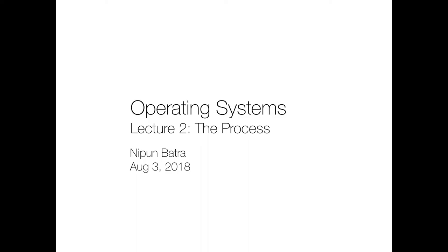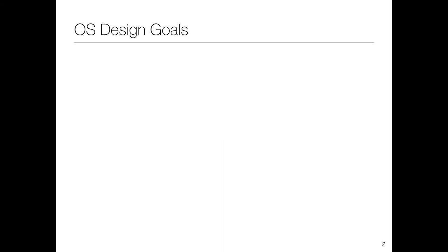Let's start the lecture. Yesterday we talked about basics of operating systems — we saw the history of operating systems, discussed a few ideas on why we should be studying them, and discussed about the three parts of the course as per the book. Today we're going to start the first part, which is CPU virtualization, starting with the process. But before that, there's one small component we didn't cover: the design goals of an operating system.